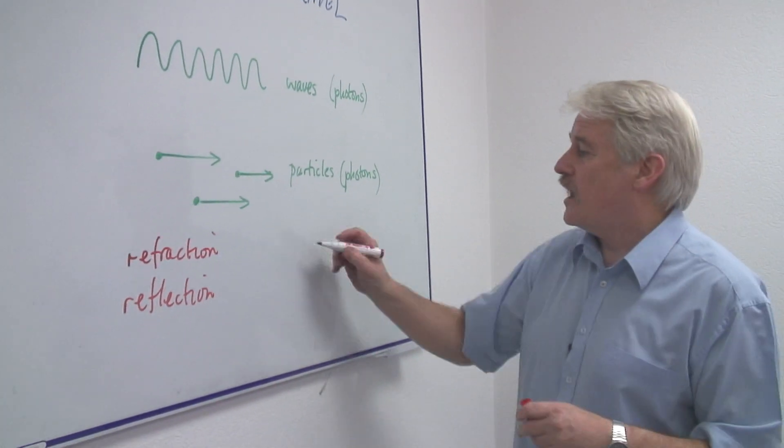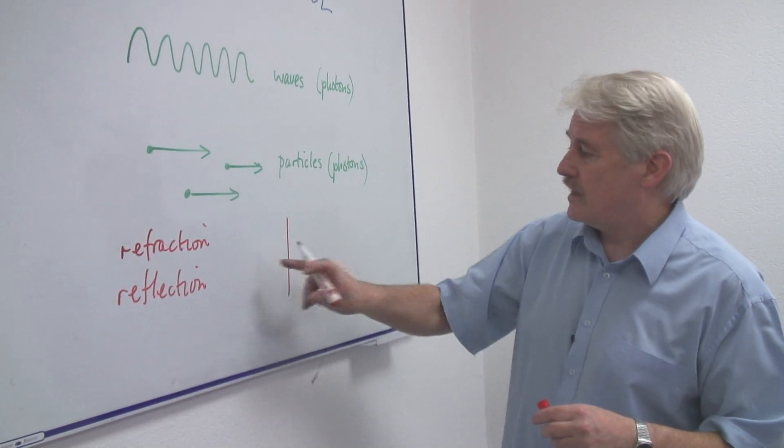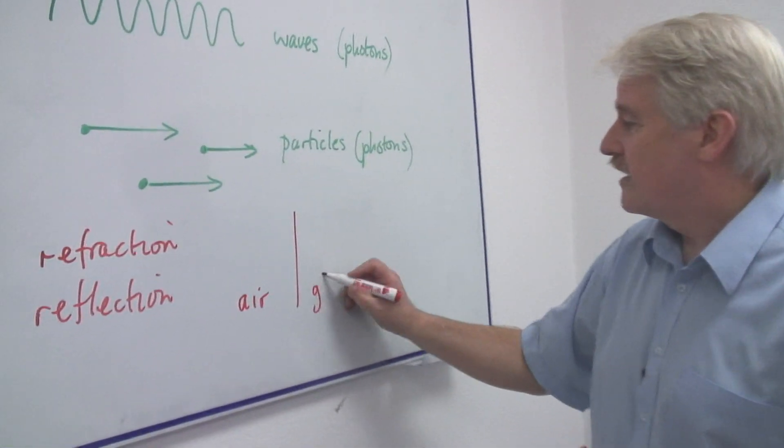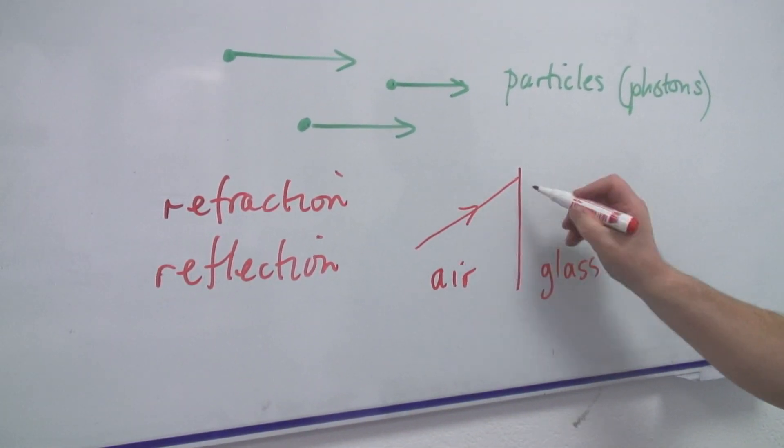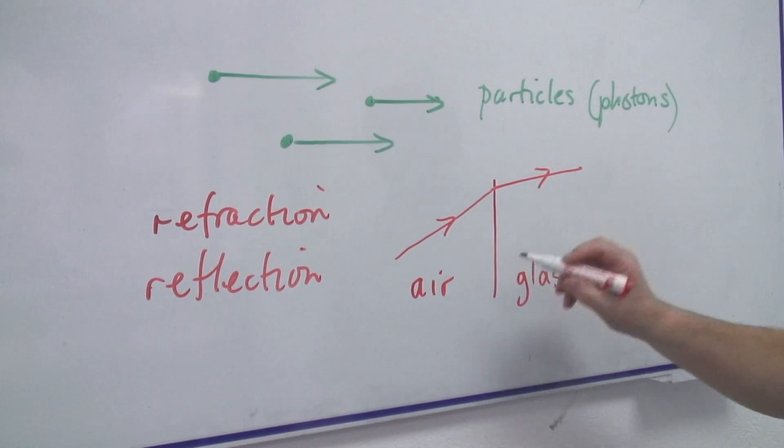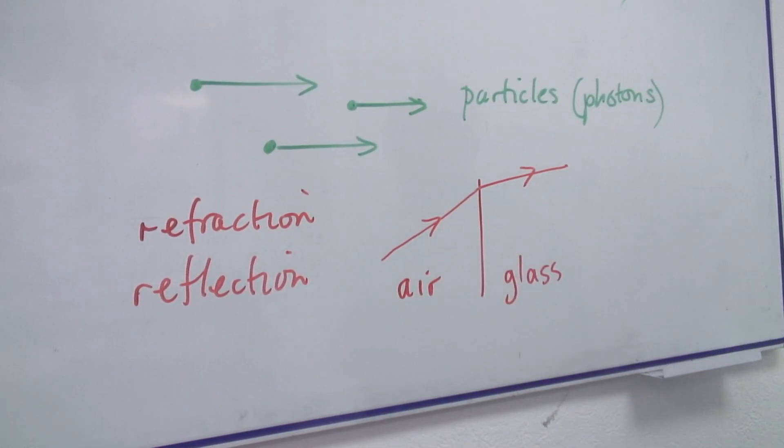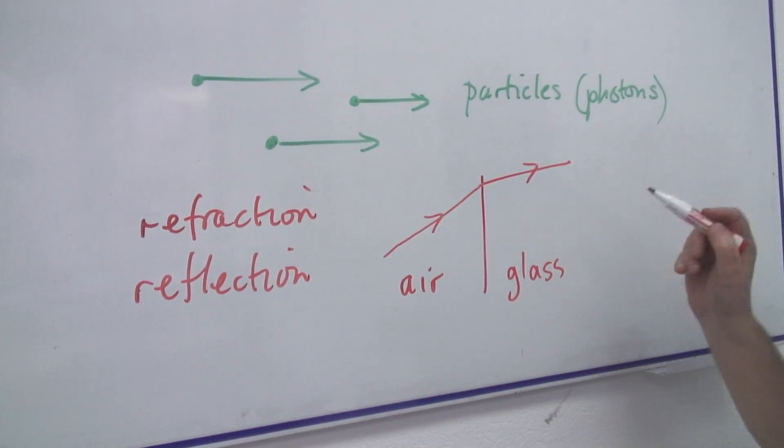Refraction is when, for example, here's air and here's glass and we see light going into the glass and bending. This is refraction. Well, to explain this...